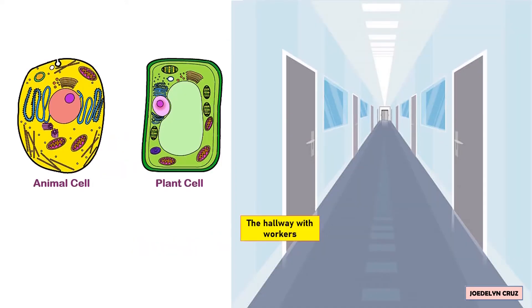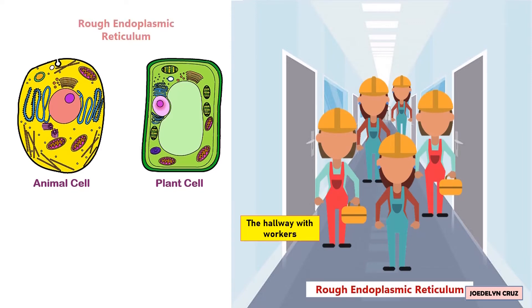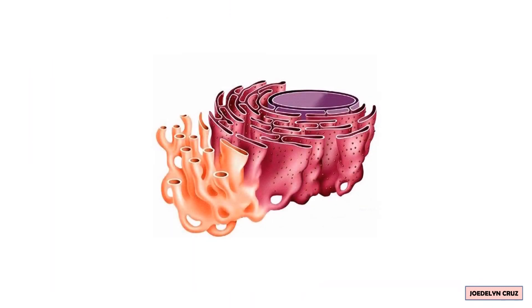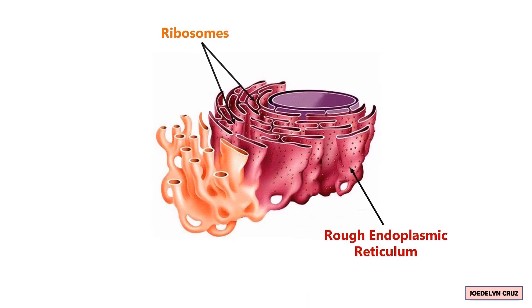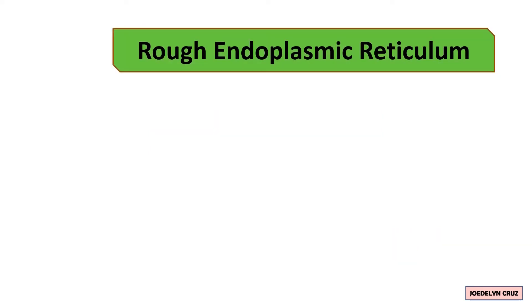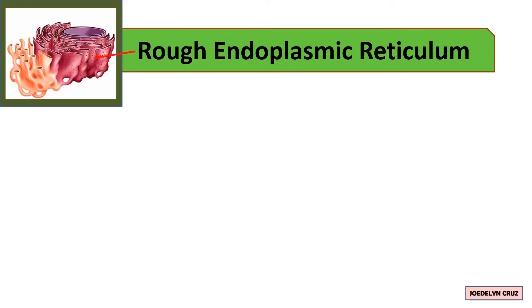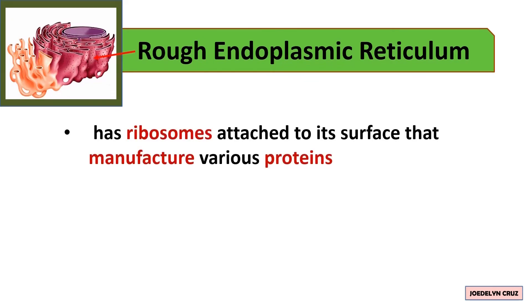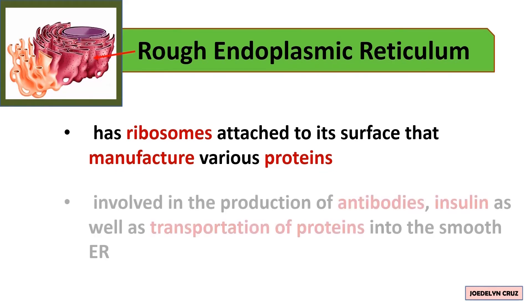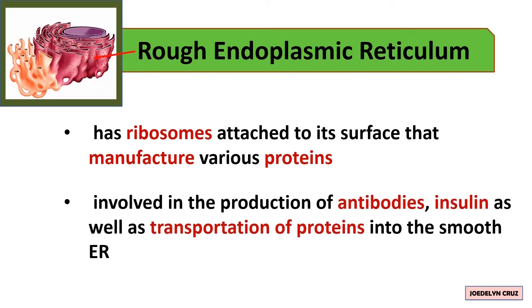The hallway with workers represents the rough endoplasmic reticulum. Rough ER has attached ribosomes on its surface. Rough endoplasmic reticulum has ribosomes attached to its surface that manufacture various proteins in the cell. Additionally, rough ER is involved in the production of antibodies and insulin, as well as the transportation of proteins into the smooth endoplasmic reticulum.